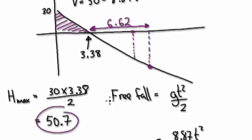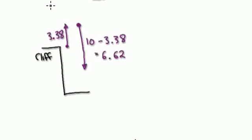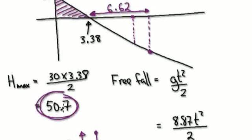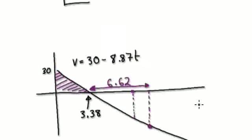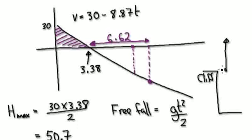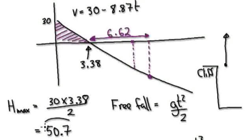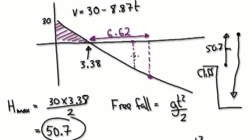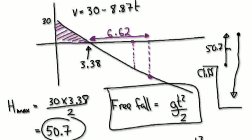Looking at our cliff diagram, the distance to maximum height is 50.7 meters. Now we need to know the distance covered by the free fall. Jump to the free fall formula. We are free falling for 6.62 seconds — free falling from the maximum height back down. T_plank is the time it takes to free fall back to the plank level. When you fire the cannonball up and it free falls, T_plank is right at that point.